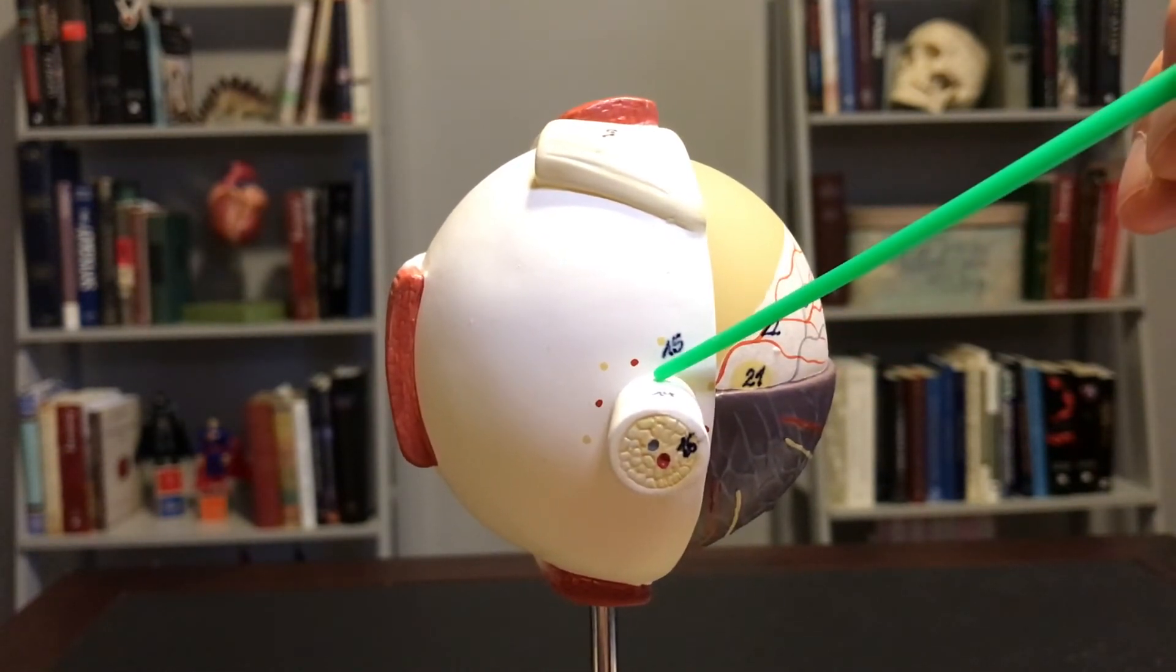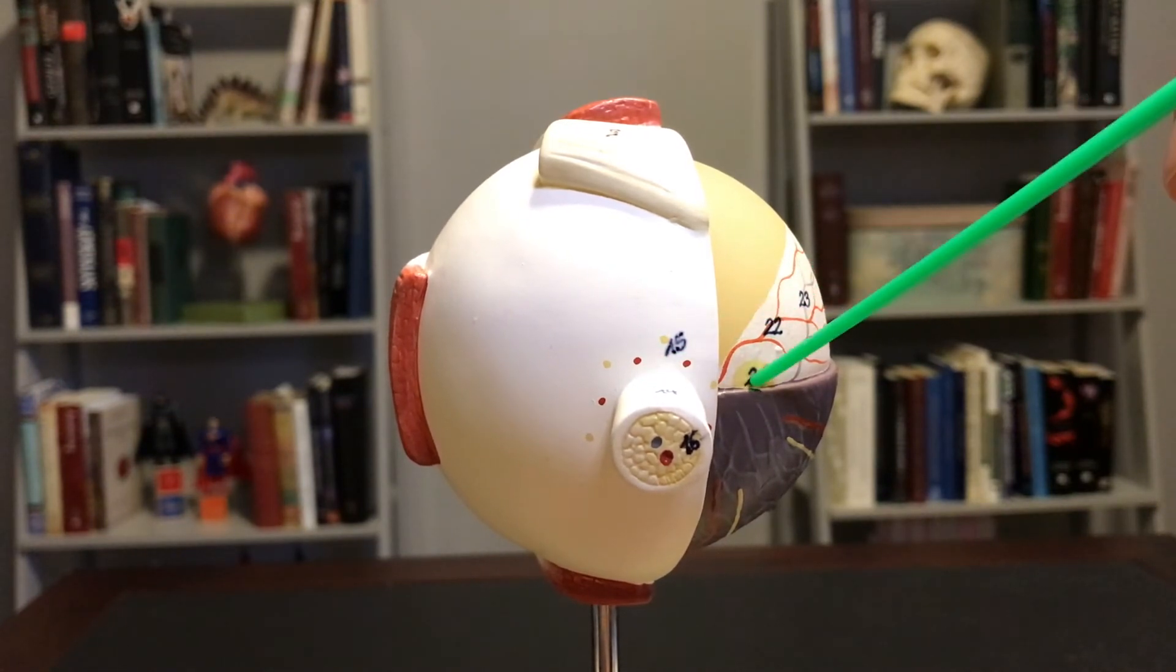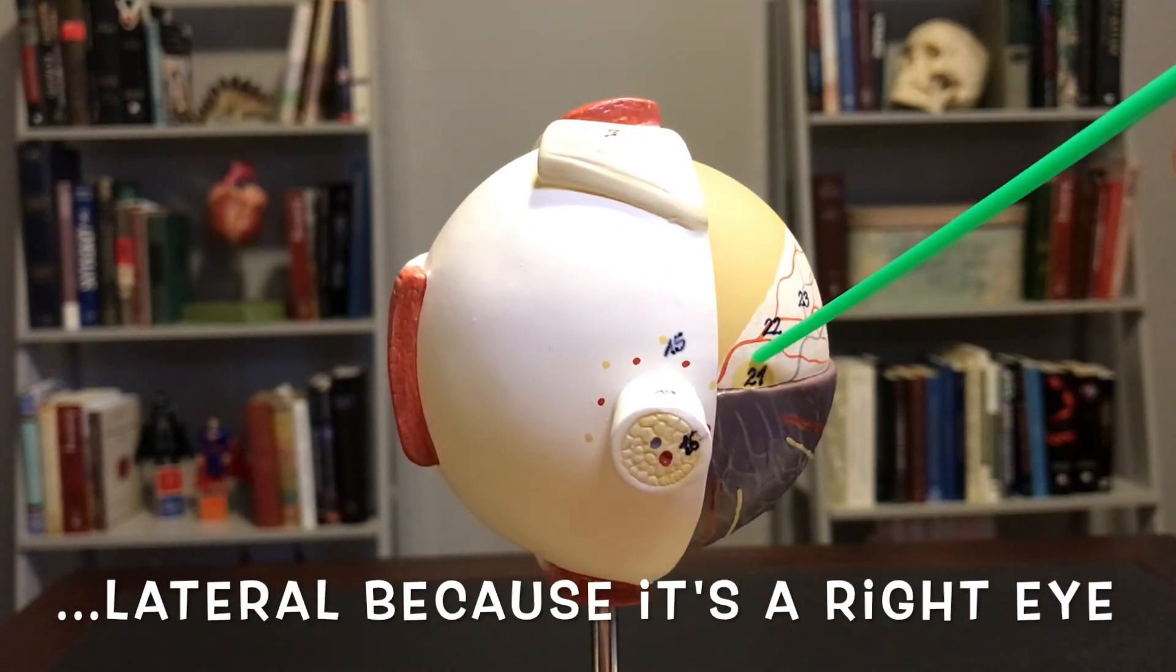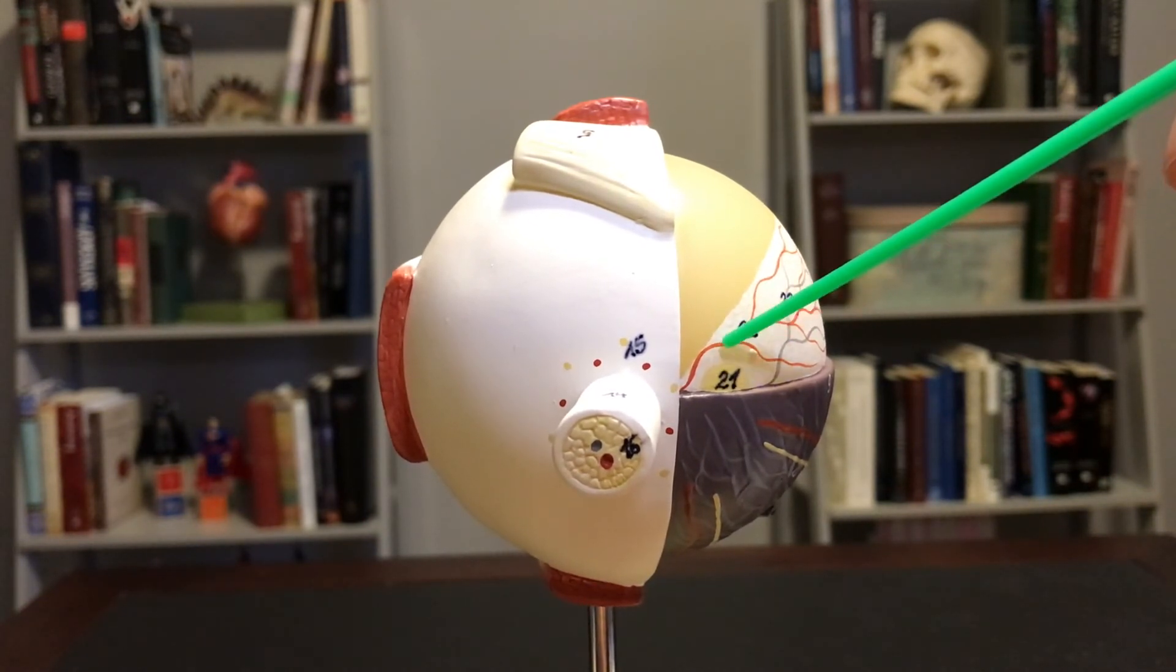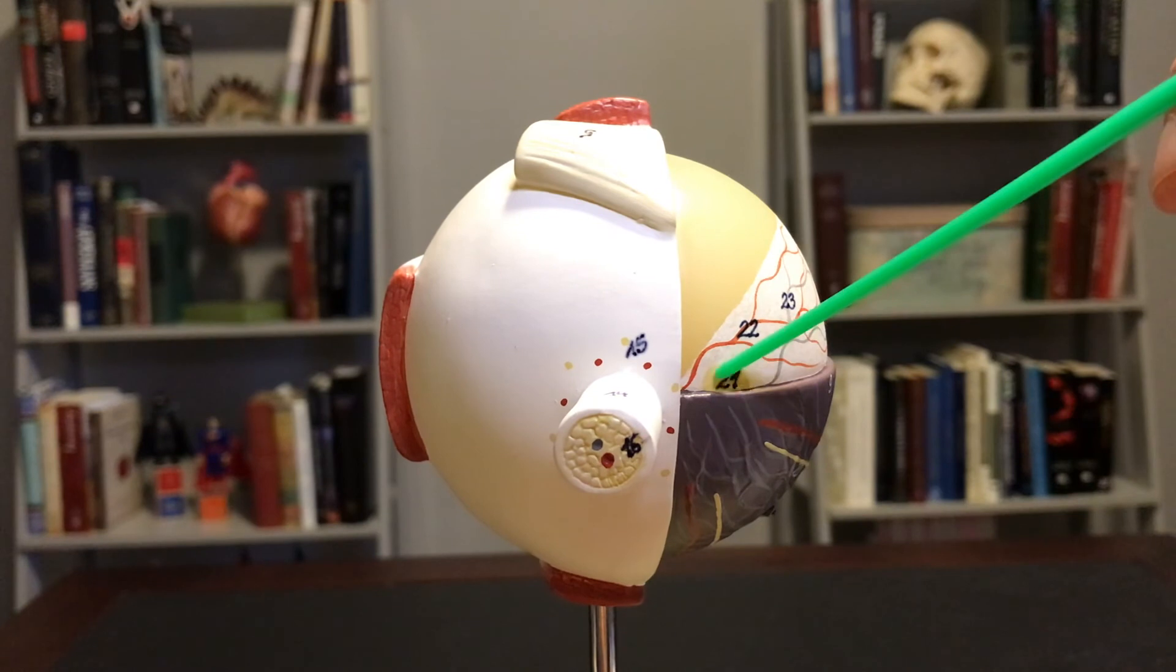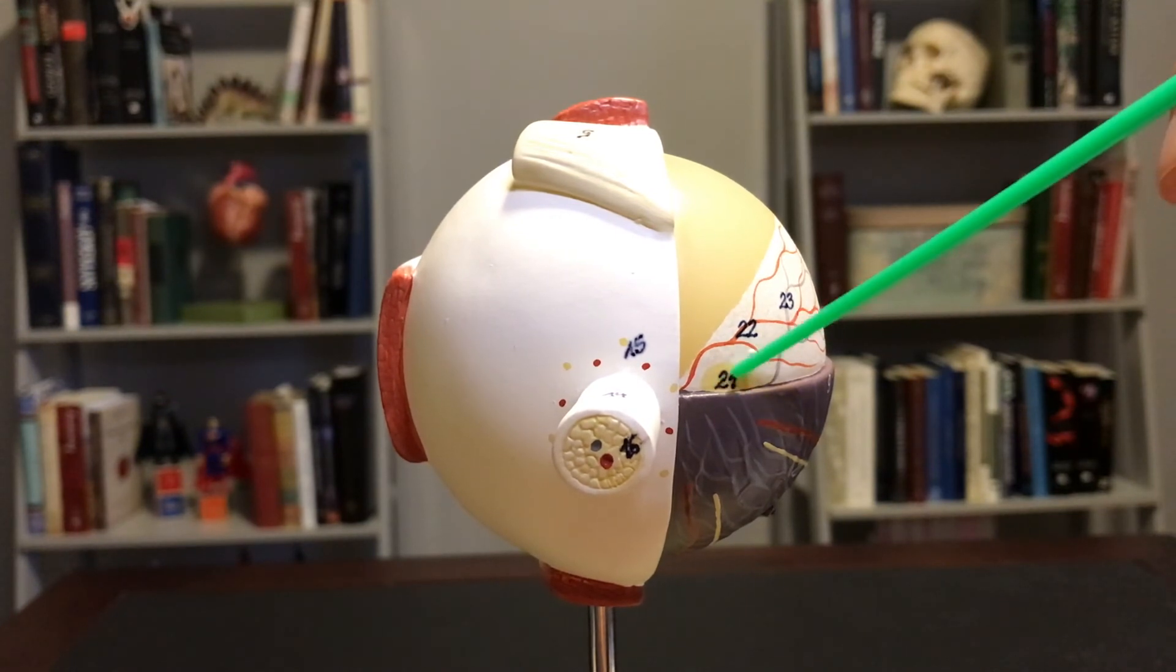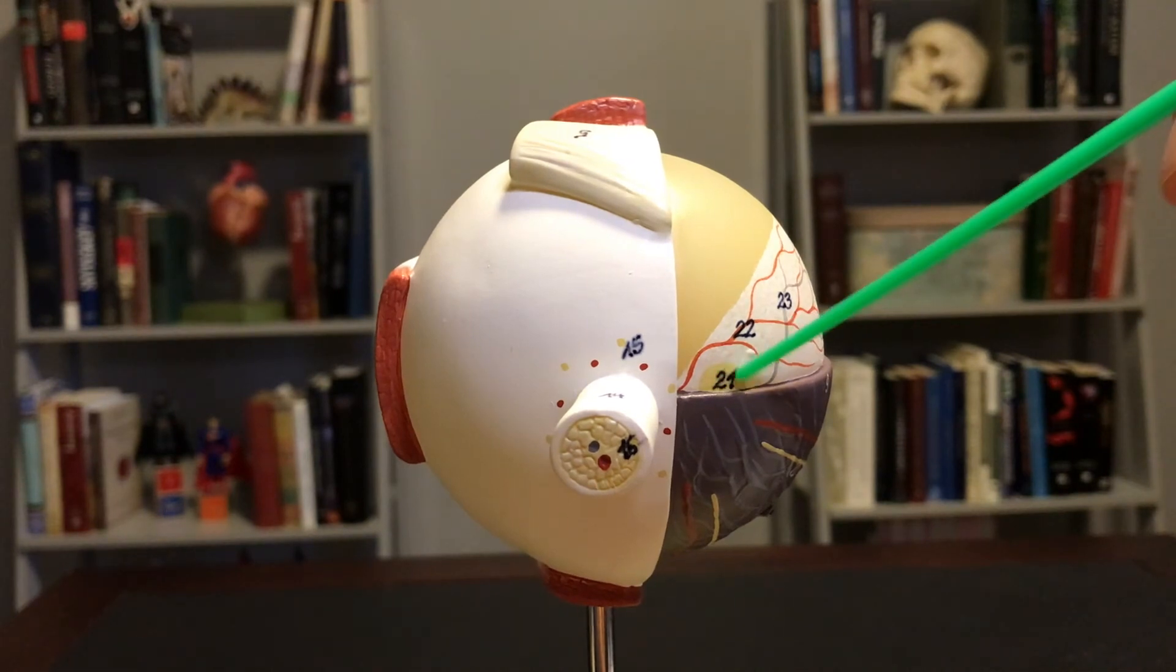If you also look just laterally to where this retina enters the eye, you'll see this yellow spot right here. And this is what we call the fovea. The fovea is that area that is loaded up with cones, helps us with vision and color and sharpness.